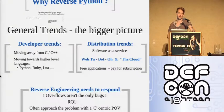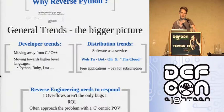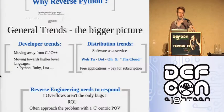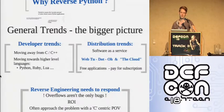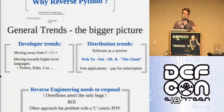High level languages — Python, Ruby, Lua, etc. — are much more rapid to develop in. Developers coming straight out of university can do Python much better than C. So there are more developers, it's cheaper to develop, and it's cross-platform. There's also a change in distribution: five or six years ago you'd always download an application, but now it's all Web 2.0, the cloud — software as a service.